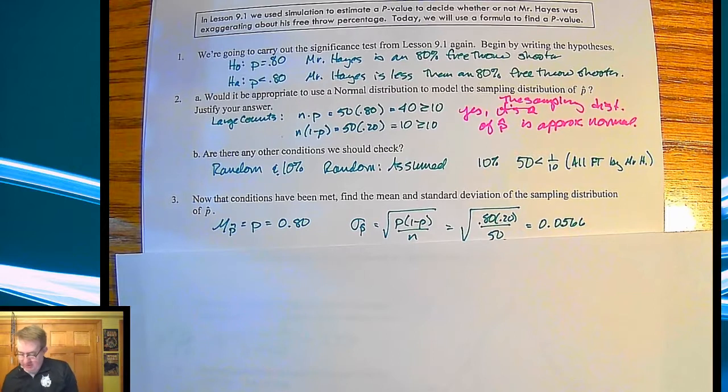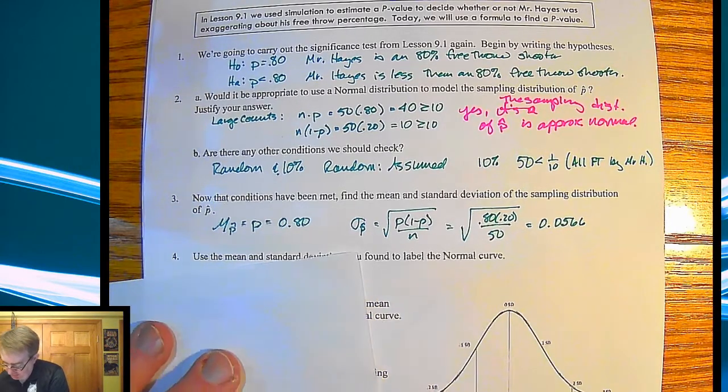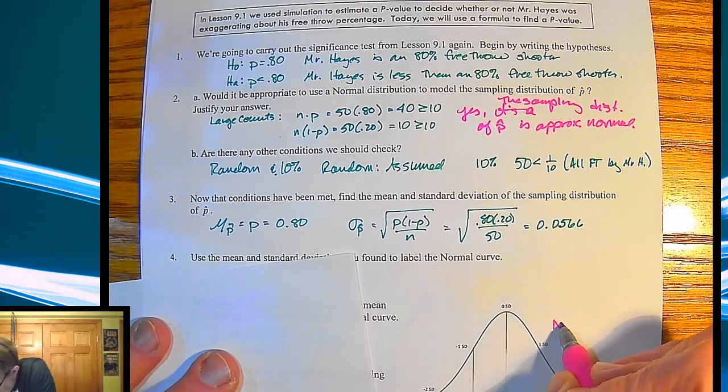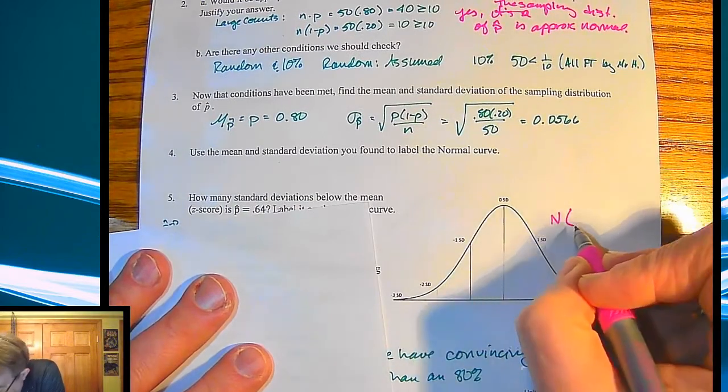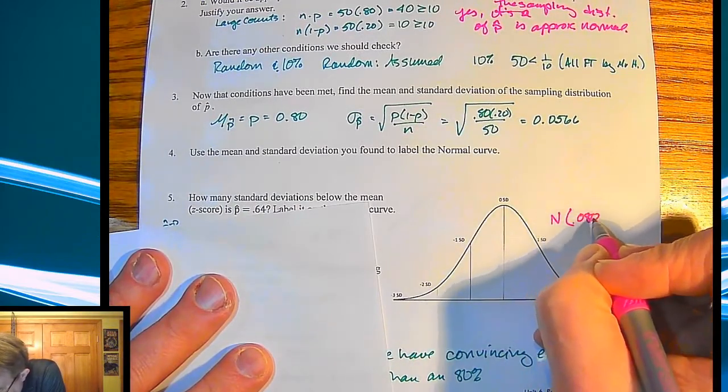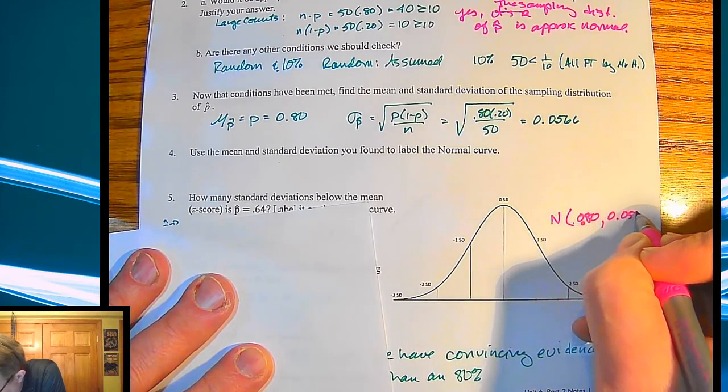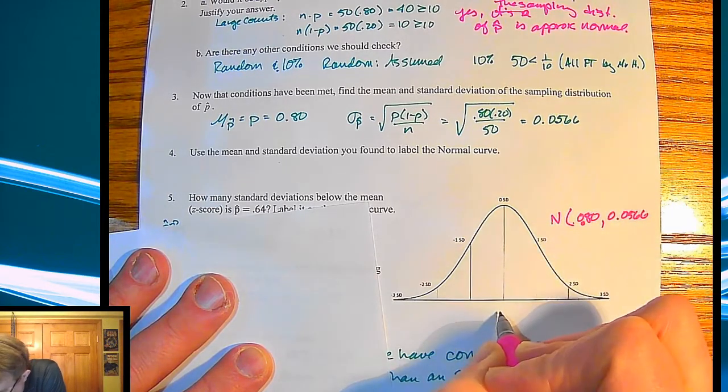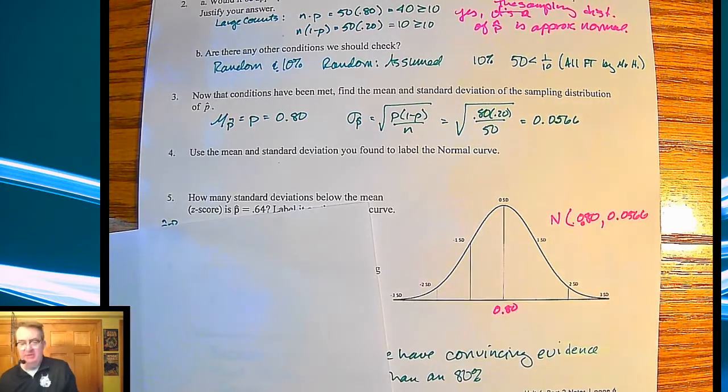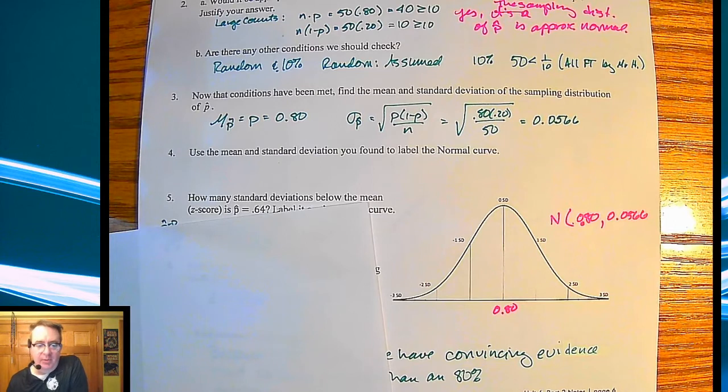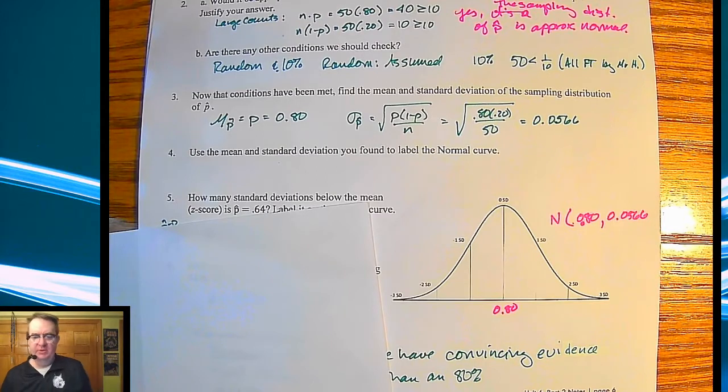So now the big question here is this. So now use the mean and standard deviation to label the normal curve. So what we're going to end up doing over here is that I have my normal curve. Should we see that? Sorry. So we're going to make sure that we have our normal curve. I have 80% and 0.0566. Down over here is my 80%. And then down over here, oh, we don't know what my z-score is. So we're going to have to figure that out, aren't we?